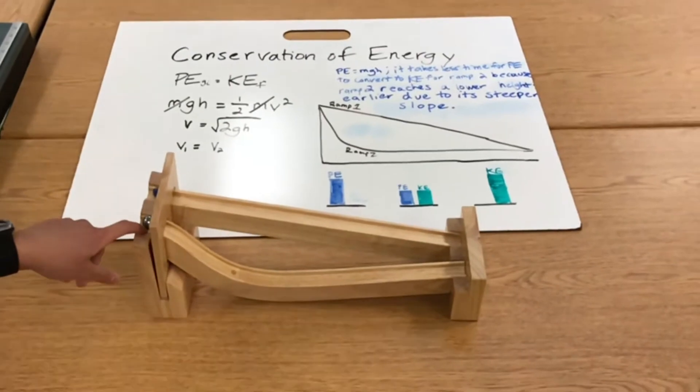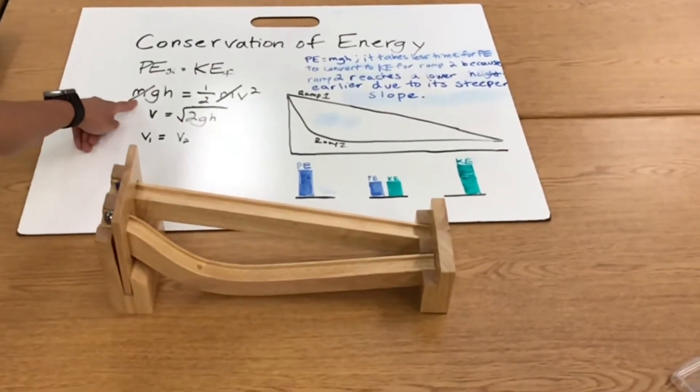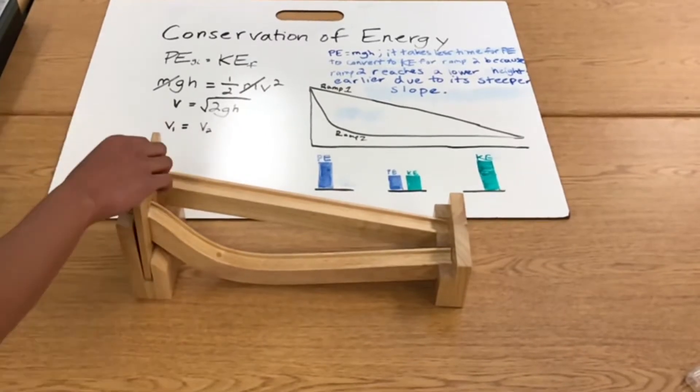The ball on the steeper ramp will reach the bottom first because mass is not taken into account for the final velocity.